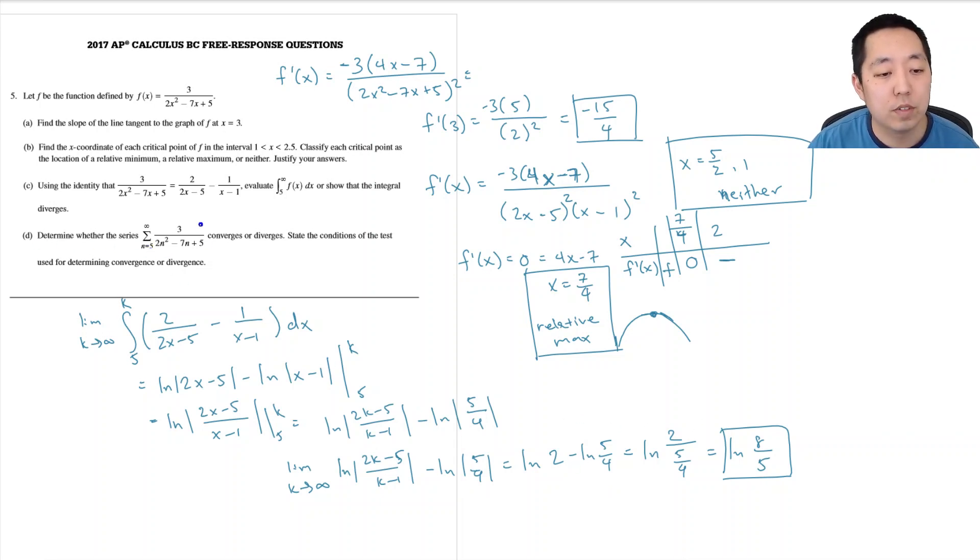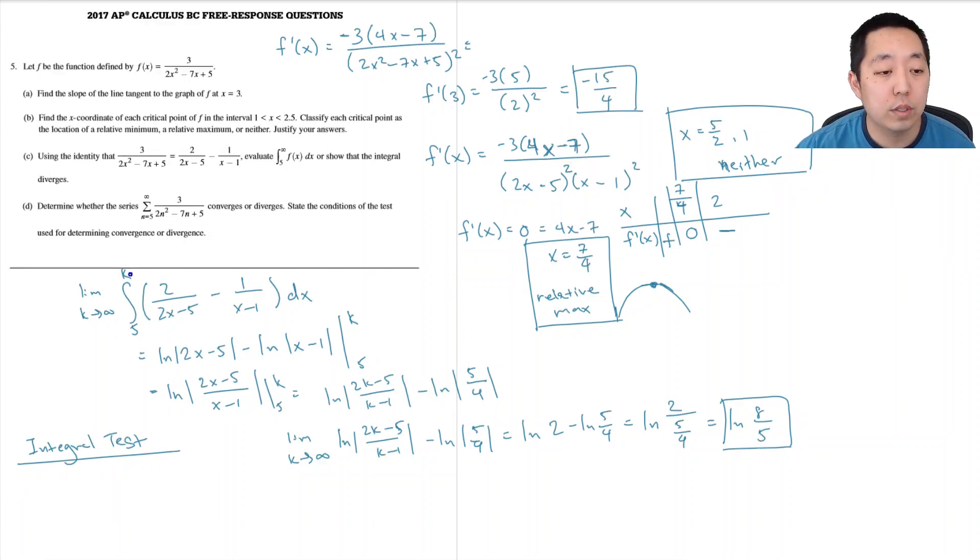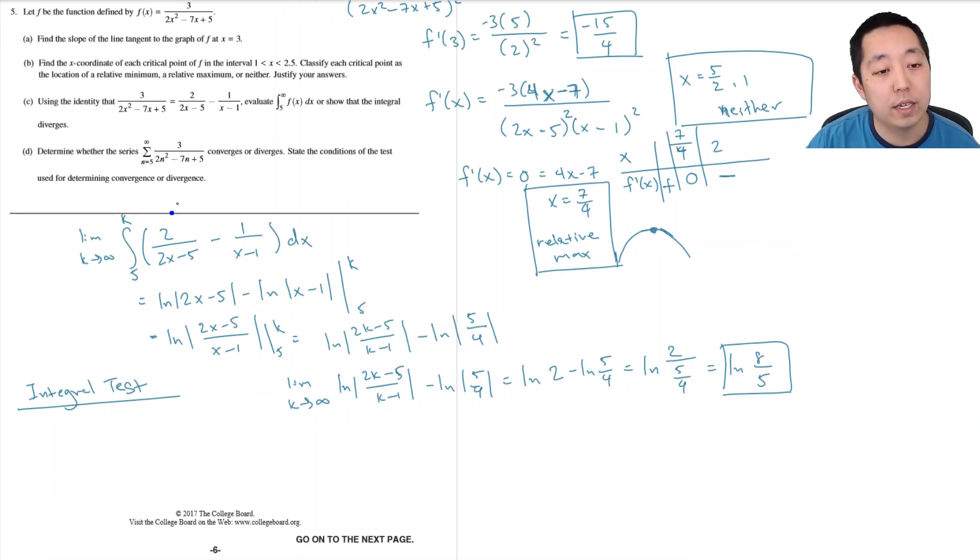Determine whether the series converges or diverges. And state the conditions of the test used for determining convergence or divergence. Well, so we did the integral test basically. So we use the integral test for convergence. Now the conditions are that, I think f(x) is to be decreasing. That's one of the big criteria. I don't know what the other ones are. If there are other, f(x) is decreasing.